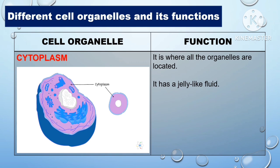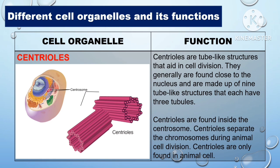Another cell organelle is the cytoplasm. It is where all the organelles are located, and it has a jelly-like fluid. Another cell organelle is the centriole. These are tube-like structures that aid in cell division. They are generally found close to the nucleus and are made up of nine tube-like structures that each have three tubules. Centrioles are found inside the centrosome, separate the chromosomes during animal cell division, and are only found in animal cells.